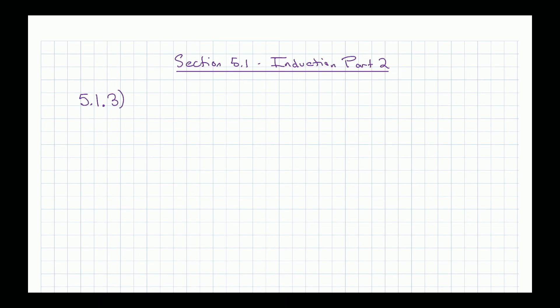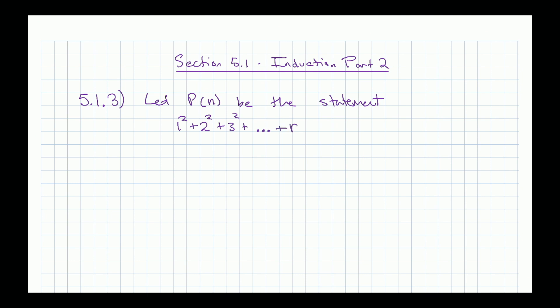These are just sample problems from Section 5.1. We're going to do 5.1.3 first. The way these are organized is they have parts a through f and it walks you through the entire proof. So 5.1.3 says: let P(n) be the statement that 1² + 2² + 3² + ... + n² equals n(n+1)(2n+1) over 6, for all n = 1, 2, 3, ...